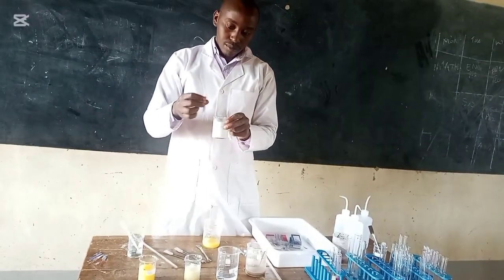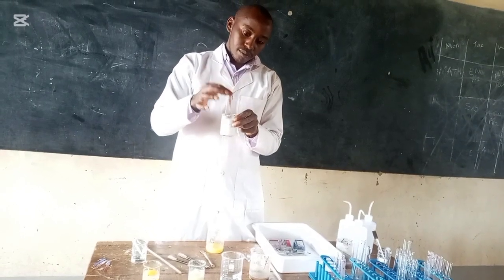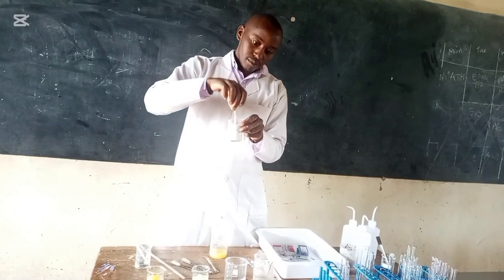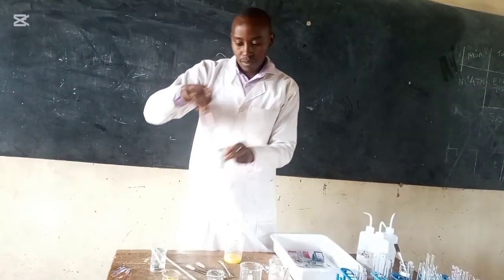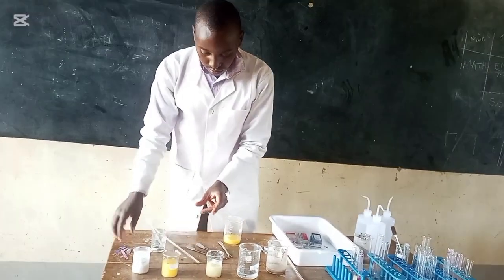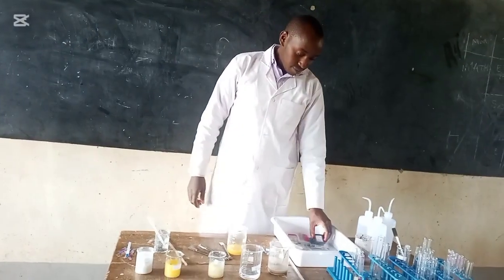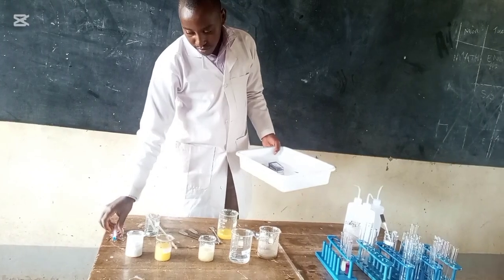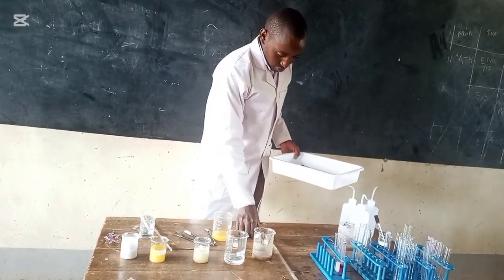That is how we conduct the test on all five solutions. Blue litmus turning red means acidic; red litmus remaining red also indicates acidic. I hope you have enjoyed my lesson. Keep watching, and thank you — see you in the next video. If you are new here, make sure you subscribe, and all the best as you prepare for your exams. Good evening.